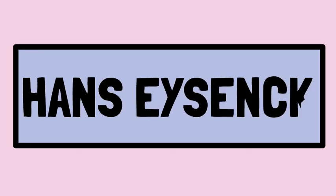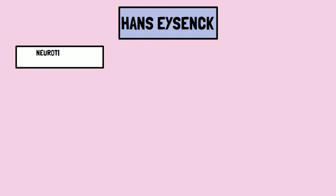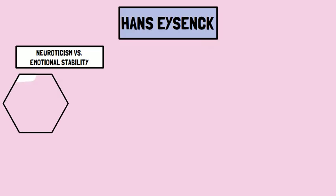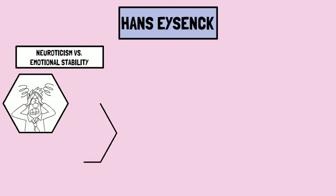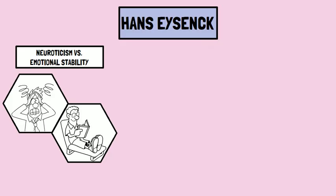Hans Eysenck also contributed to the trait approach with his own theory of personality, in which he proposed three primary dimensions. The first is Neuroticism vs. Emotional Stability, which refers to the degree to which people have control over their feelings. At one extreme, we find people who are neurotic — they are anxious, moody, touchy, restless and quickly lose control. At the other extreme lie people who are calm, even-tempered, reliable, and remain under control.